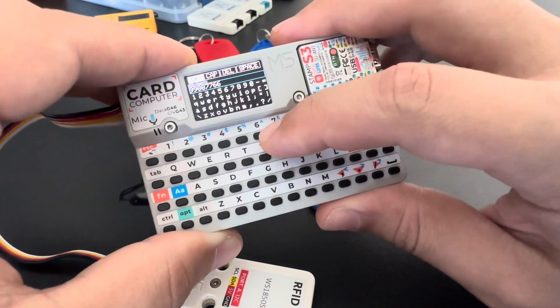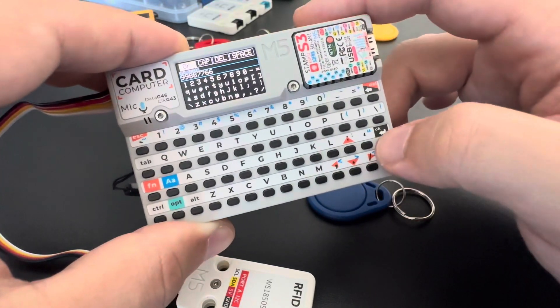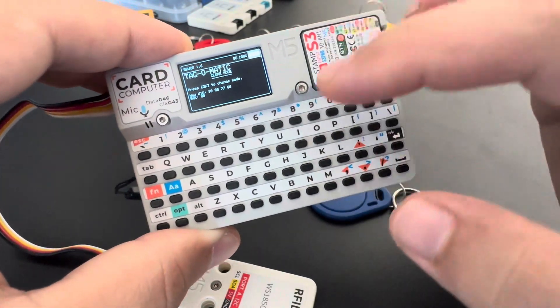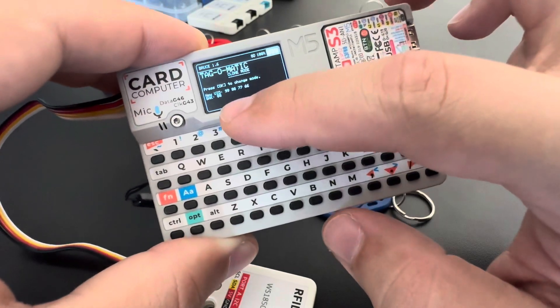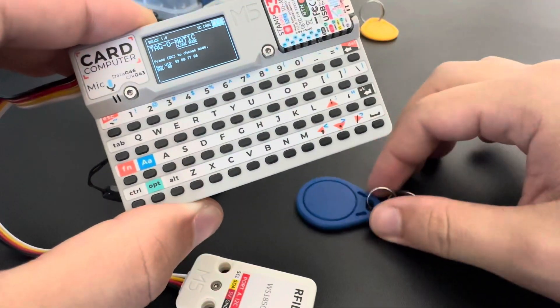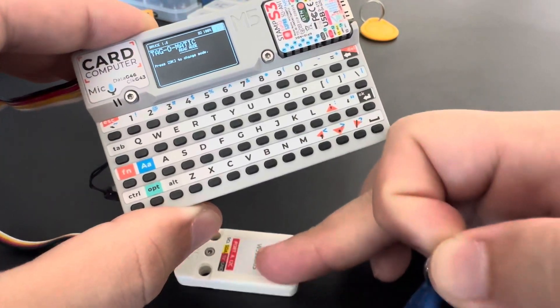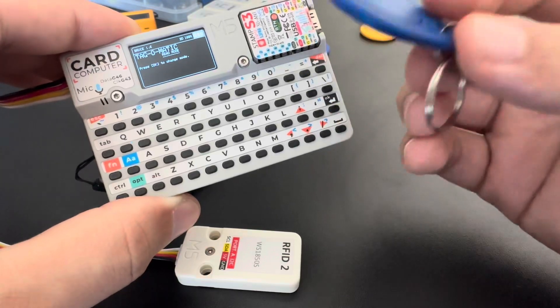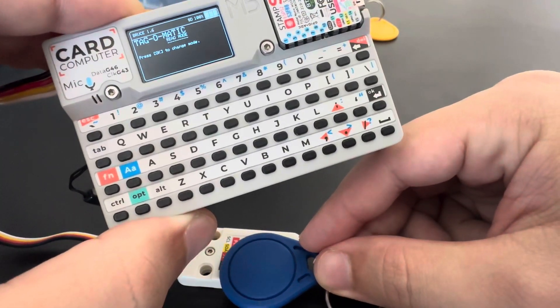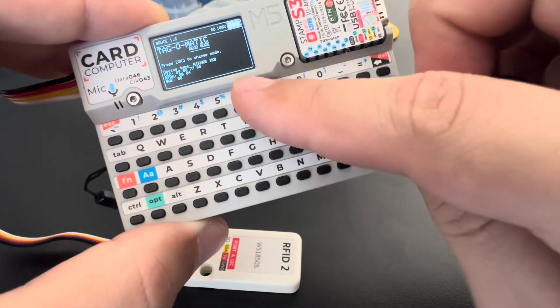So I have to type all of the digits. Once I press OK, it will go to the clone mode with this new UID. See, 99887766. And if I put the tag here, now the UID is changed. Let's check. OK, now it's 99887766.